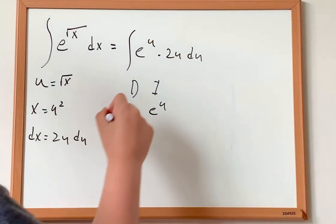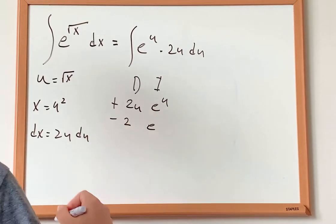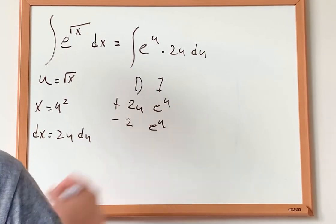The derivative of 2u is just 2 and the integral of e to the power of u is just e to the power of u.